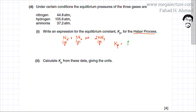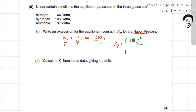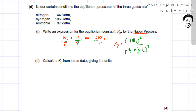The expression is: the partial pressure of NH₃ squared (since there are two moles of NH₃) in the numerator, divided by the partial pressure of N₂ (one mole, so no exponent) multiplied by the partial pressure of H₂ cubed (three moles of H₂). This is the full expression for Kp.